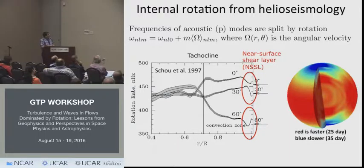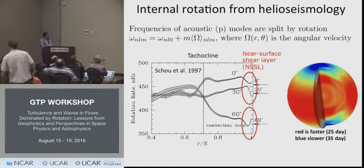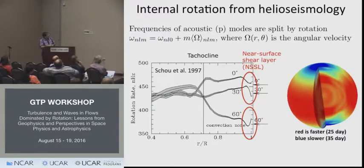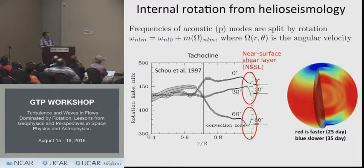This is a plot of the angular velocity in the sun in nanohertz — omega divided by 2π — as a function of the scaled radius. In the radiative interior you have nearly rigid body rotation, and in the convection zone you have latitudinal differential rotation. The curves are shown at 0, 30, and 60 degrees. There is a very interesting layer of shear called the tachocline.